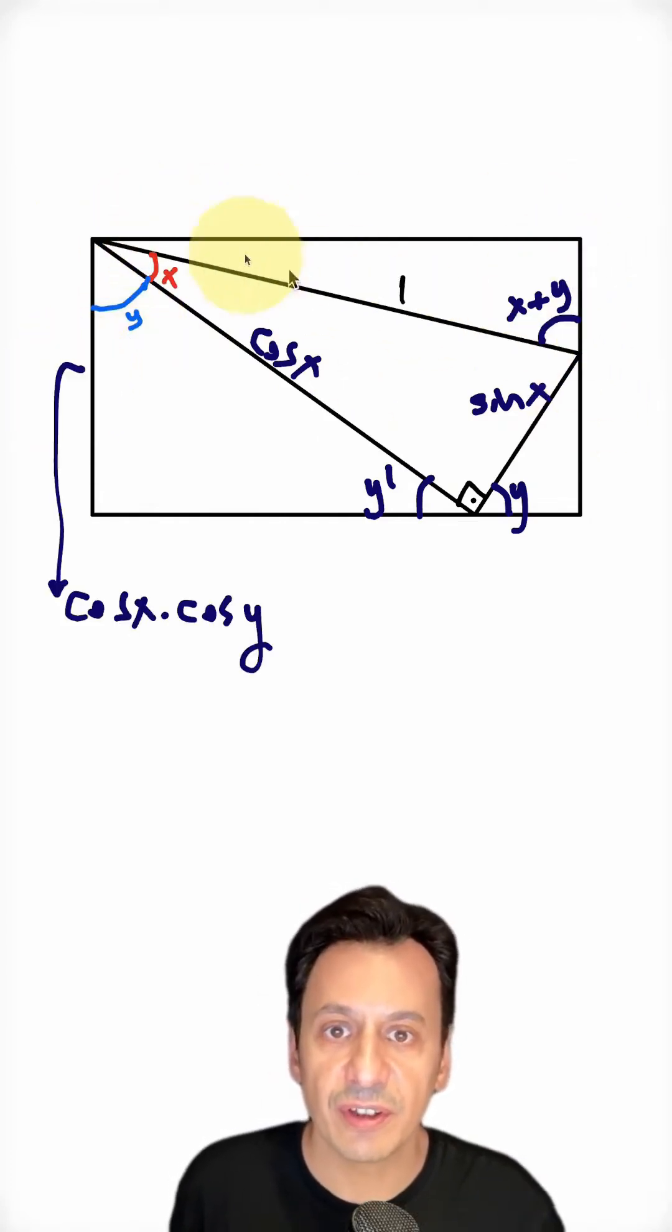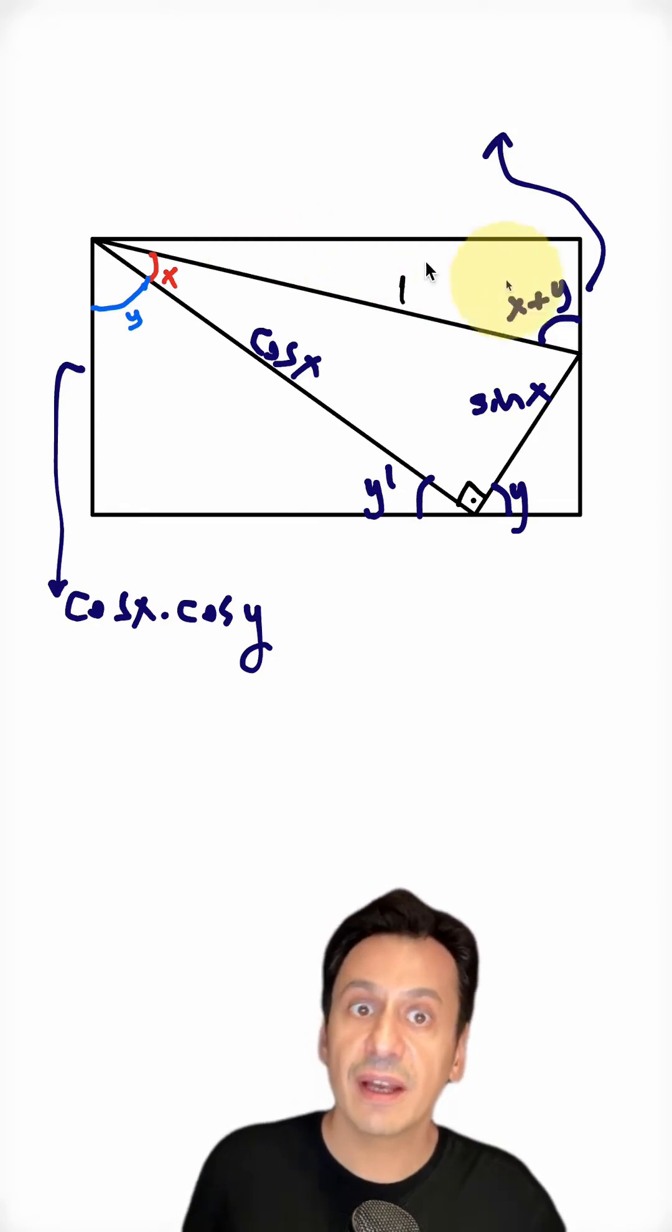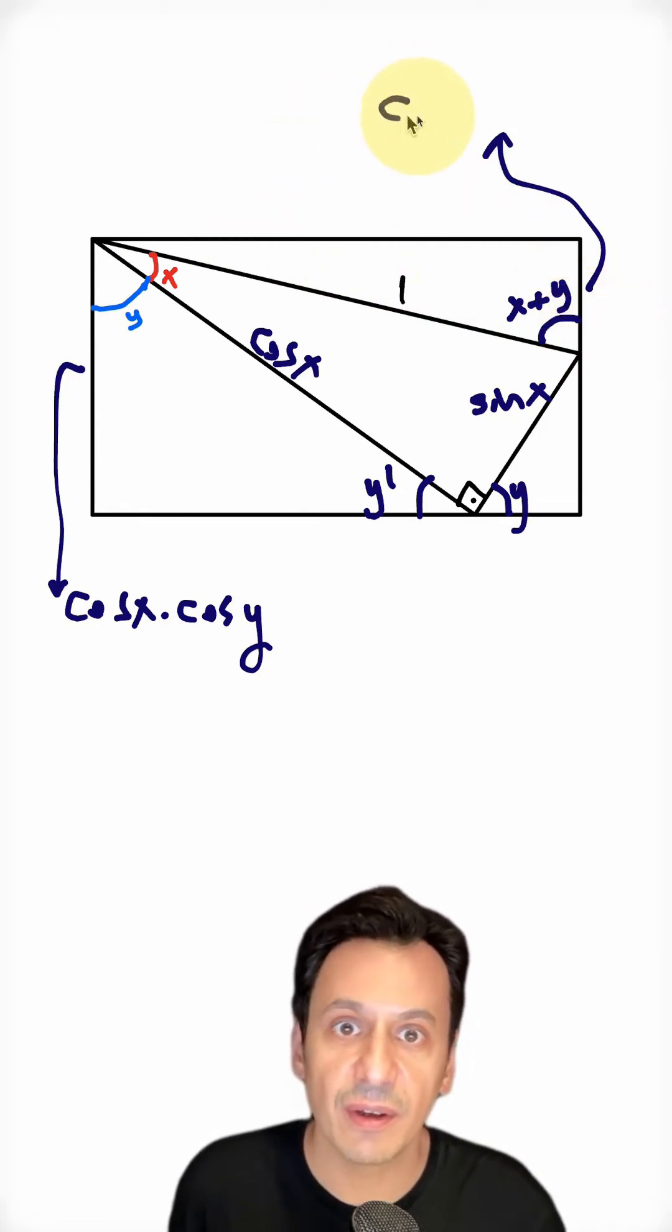Similarly, when we look at the right triangle here, our hypotenuse is 1. For the adjacent side of x plus y here, we can write 1 times cosine of x plus y, or simply cosine of x plus y for short.